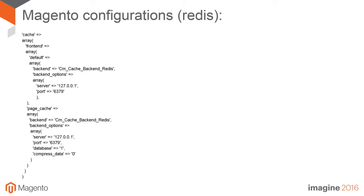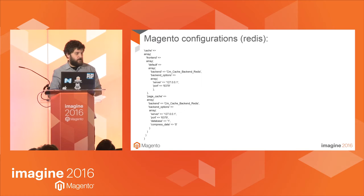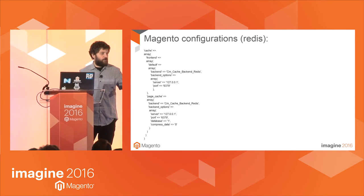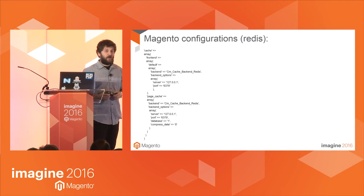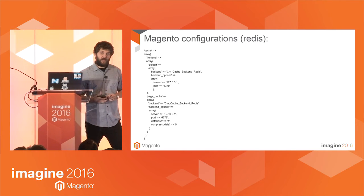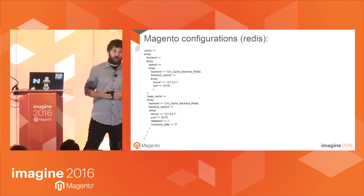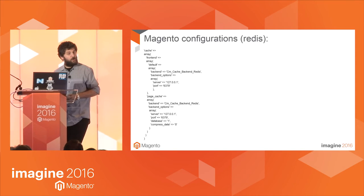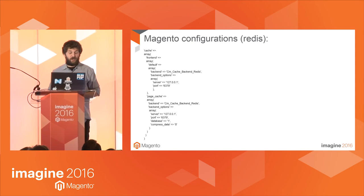Most of the code snippets you will see today were taken from devdocs.magento.com, the best place to get the official documentation. As you can see, this is how we configure Redis. This is quite simple and pretty self-explanatory, but if you have any questions feel free to ask them at the end of the talk.